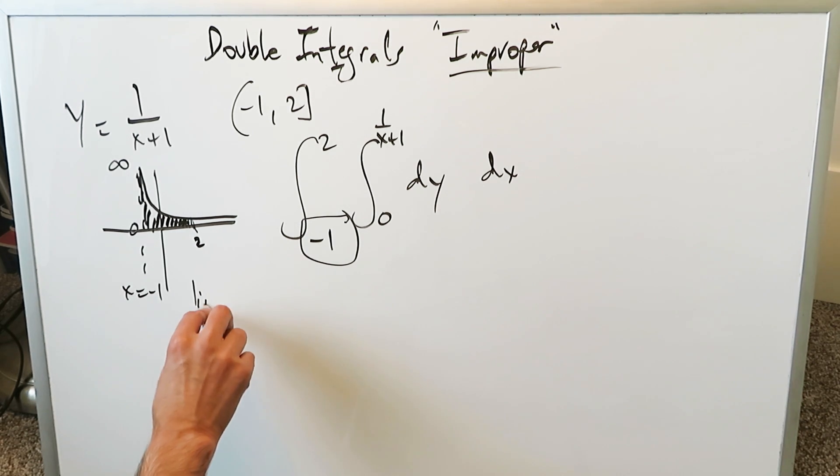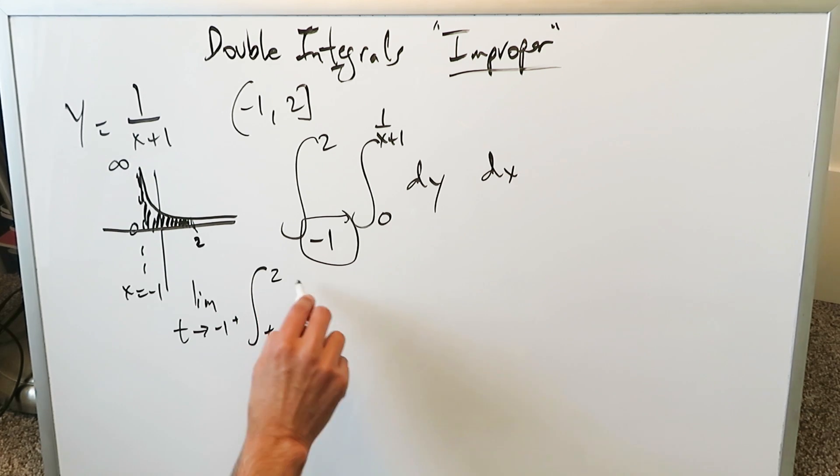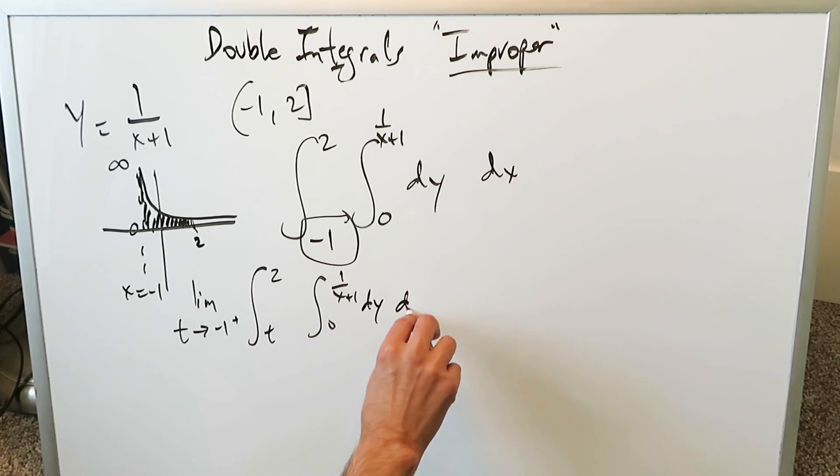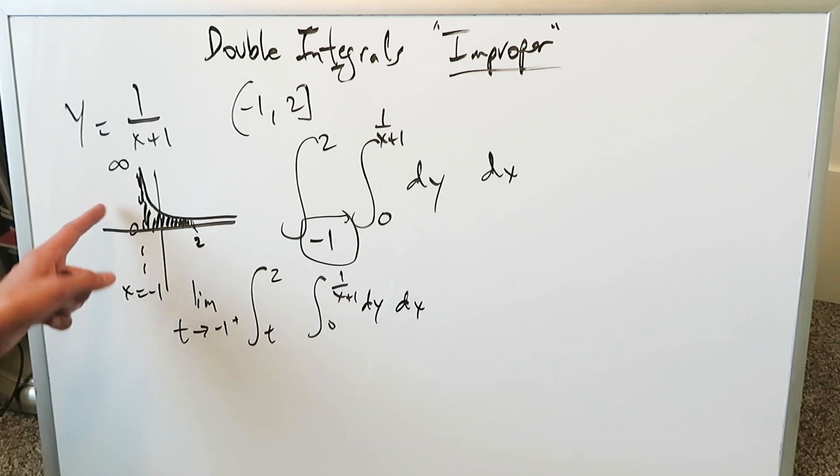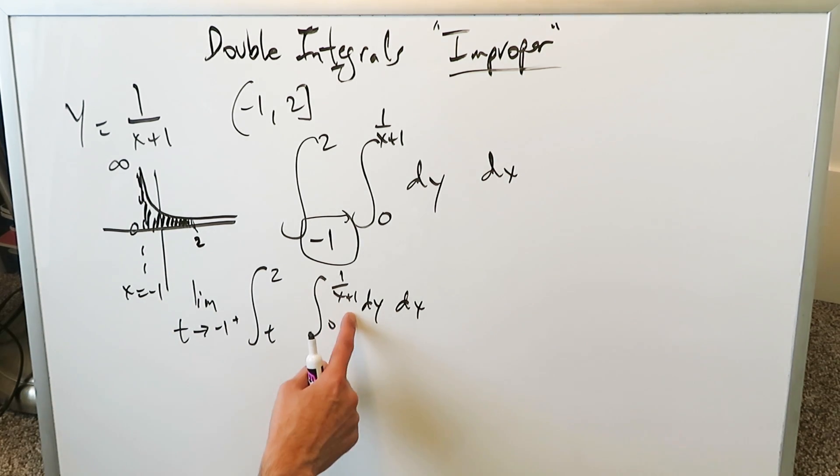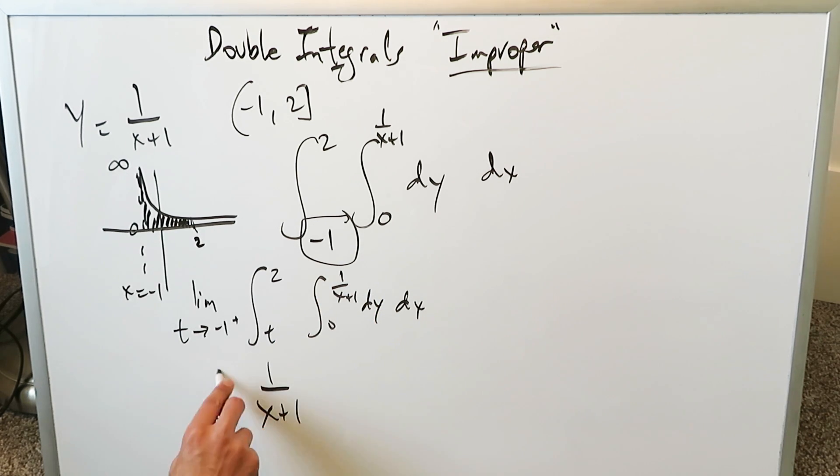You can formalize everything here. Limit as t approaches minus 1 from the right. You have t to 2, 0 to 1 over x plus 1, dy and dx. That's my double integral for this representation. The antiderivative here is y. Upper limit, lower limit, 1 over x plus 1 will become the input for your next integral.